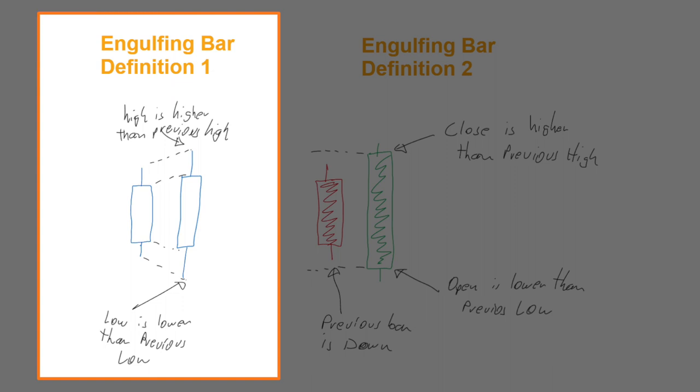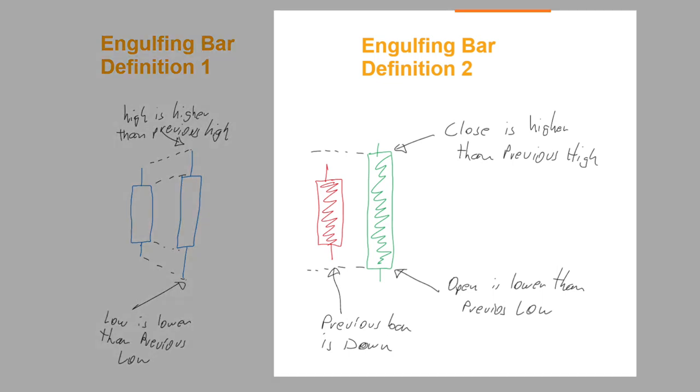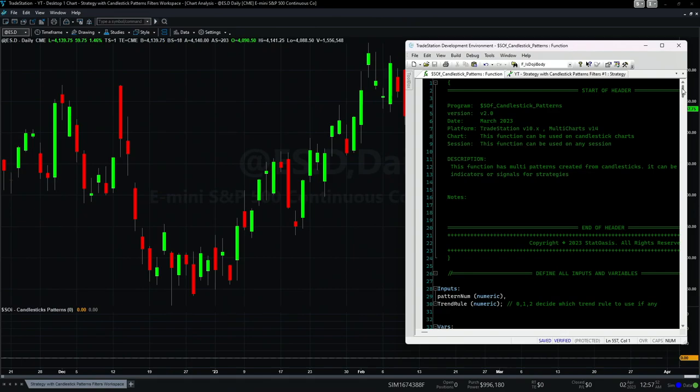Those patterns can be interpreted in many ways. For example, an engulfing pattern has a high higher than the previous high and a low lower than the previous low, but you can also add more conditions — for example, the close higher than the previous close and the open lower than the previous open. You can also define that the previous bar is a down bar and the current bar is a green bar. I took those old patterns, created more derivatives, and now have 44 patterns coded in EasyLanguage. Today I will show you two secret methods of how to use candlestick patterns.